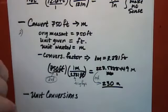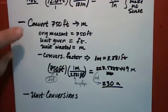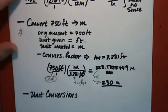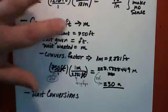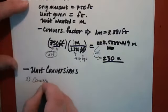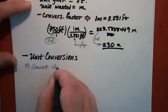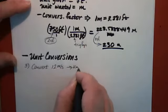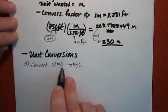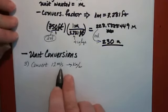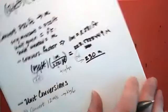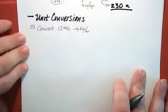Here we are for lecture four. The last example we worked for unit conversions was number two — converting 750 feet to meters. Number three is converting 12 meters per second to kilometers per hour. I'm going to do that now, because there is actually a conversion factor on the conversion sheet that will allow us to do this in one step.